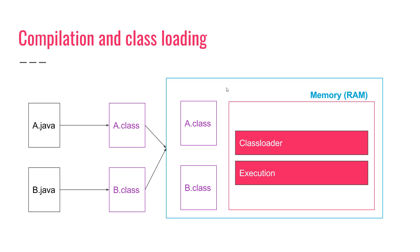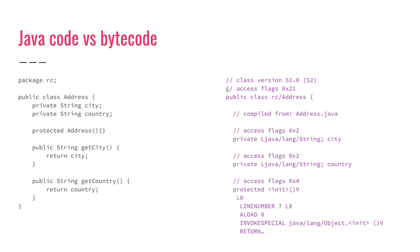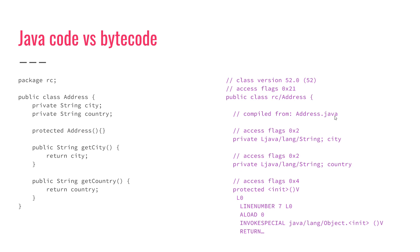Of course, this is a simplified version of the JVM — it has more components — but class loading and execution are the main steps to focus on right now. Looking at an example, on the left we have Java code and on the right we have bytecode. You can see they are both somewhat human-readable. For instance, you can see the bytecode is compiled from a Java file called address.java, and we have a string field 'city' represented as Java language string.